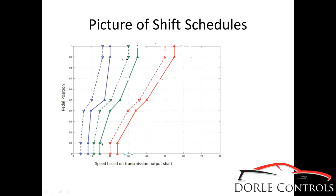If you step your foot into the gas, it's going to keep you in the lower gear longer to allow you to take advantage of that extra output torque. The green line is the 2-3, and the 3-4. This is just a shift schedule from the internet — not a real vehicle schedule — but if you have an automatic transmission, you can try it on your car. Step into the gas lightly and see what speed it does a 1-2 upshift, then step into the gas hard from a stop and see what speed it does the 1-2 upshift. You can map out your shift points in your car if you really wanted to.